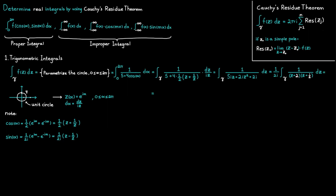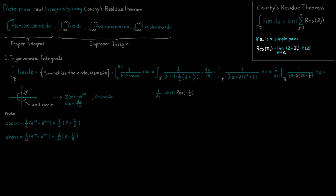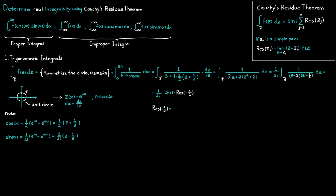When we apply the residue theorem to this integral, only the residue at minus one half is included, since the other pole at minus 2 is outside our contour. We determine this residue using the simple pole formula. After cancelling common factors, we take the limit as z approaches minus one half of 1 divided by (z plus 2), which gives us 2 divided by 3.